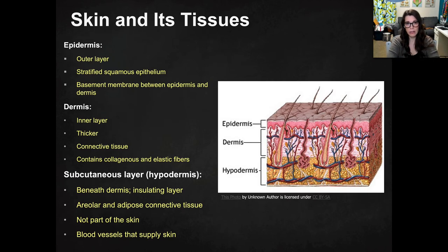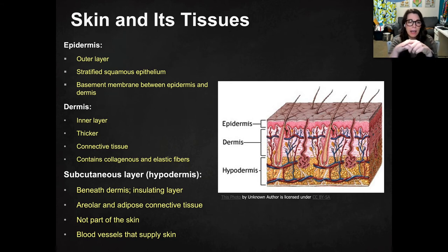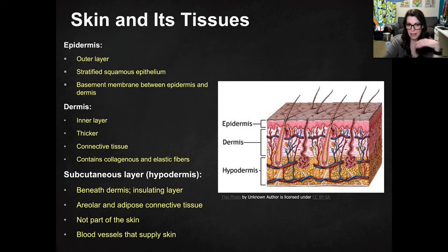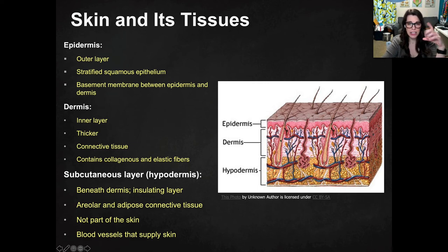So what are the layers of skin? The outer layer, the layer that you see, is the epidermis, and that is made primarily of stratified squamous epithelium, which you should remember from the last unit. And then there's a basement membrane between the epidermis and the dermis — basically a layer separating the two, which you can see on the diagram. The dermis is the inner layer — 'epi' actually means outside or above. The dermis is thicker and it has connective tissue as part of it, and it contains collagen fibers and elastic fibers that help provide structure and elasticity to the skin.